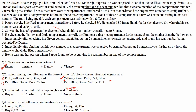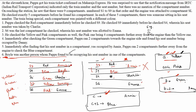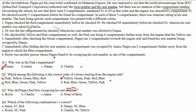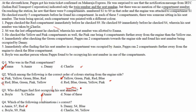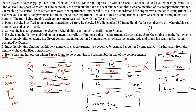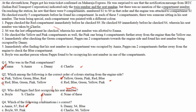Question 3: who did Pappu find first occupying his seat number? He checked S7 first, so the answer is Any — option C. Question 4: which combination is correct? Any, S7, red — yes, that is correct, so option A is the answer. Checking other options: Danny S4 blue is wrong (S4 is green, Charlie); Boyle S9 pink is wrong; Charlie S6 yellow is wrong. So option A is confirmed.